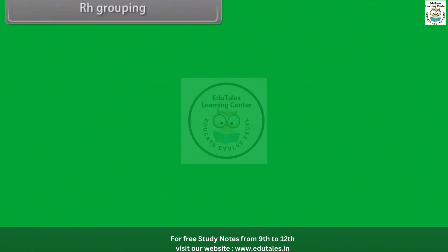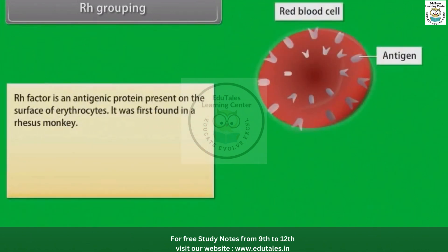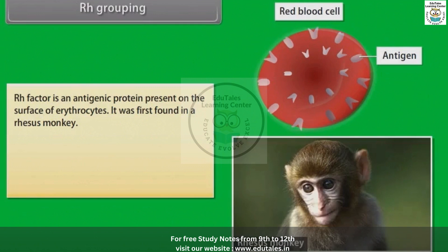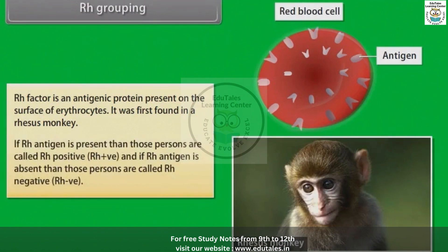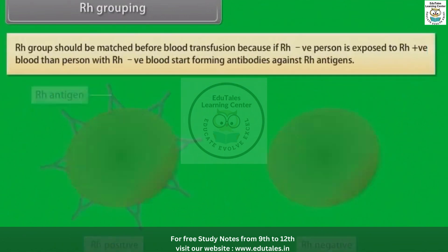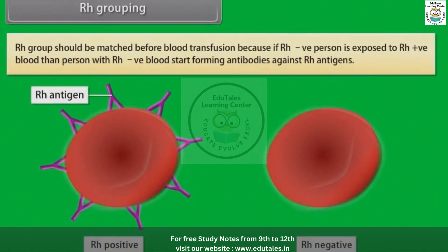RH factor is an antigenic protein present on the surface of erythrocytes. It was first found in a rhesus monkey. If RH antigen is present, those persons are called RH positive. If RH antigen is absent, those persons are called RH negative. RH group should be matched before blood transfusion, because if an RH negative person is exposed to RH positive blood, they start forming antibodies against RH antigens.